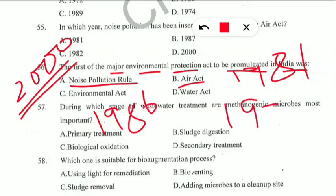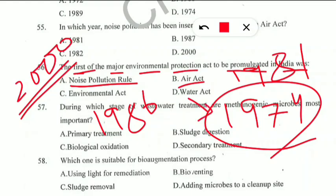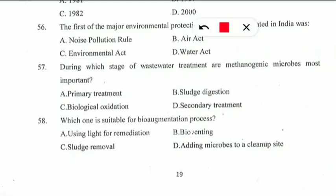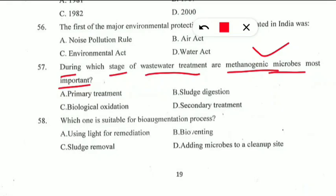The Water Act came in 1974, the Air Act in 1981, and the Environmental Protection Act in 1986 — so the first is the Water Act (option D). Question 58: During which stage of wastewater treatment are methanogenic microbes most important — primary treatment, sludge digestion, or secondary treatment? Methanogenic microbes release methane and are used in the sludge digestion process, so option B — sludge digestion — is correct.